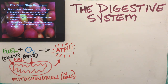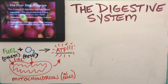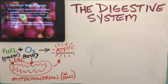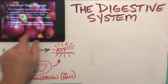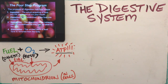The third step is absorption. Once food has been broken down into small enough pieces, we absorb those nutrients through the wall of the intestine and into the blood. The intestine has blood vessels lining it, so the small nutrient molecules can pass through the intestine wall and into the blood — that's absorption.